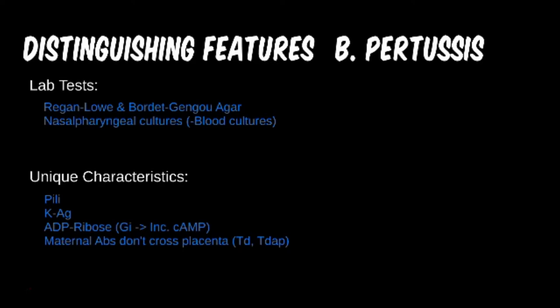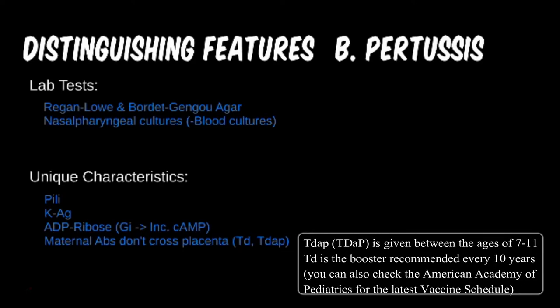It is also easy to confuse the Tdap and Td variations of this vaccine. Tdap is a combination of three vaccines which is required in childhood. Only the Td booster is needed in adolescence and adulthood.